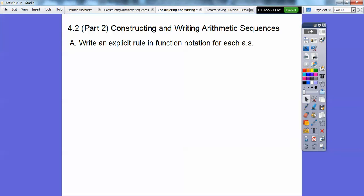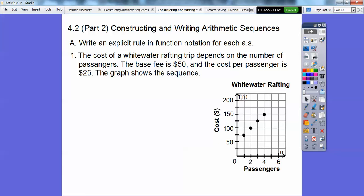Write an explicit rule in function notation for each arithmetic sequence right here. The cost of a whitewater rafting trip depends on the number of passengers. The base fee is $50 and the cost per passenger is $25. The graph shows the sequence.